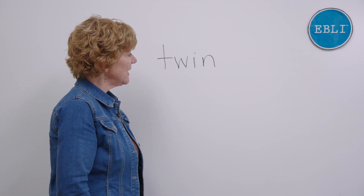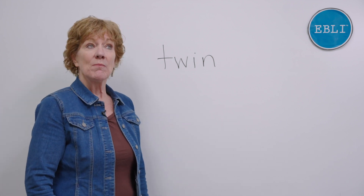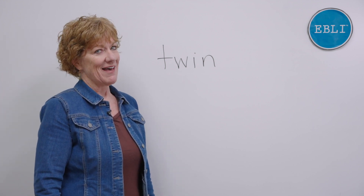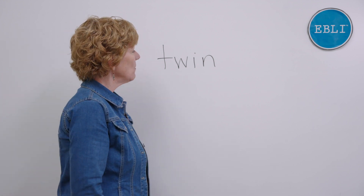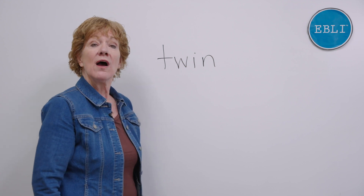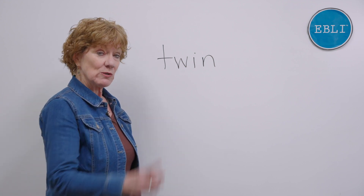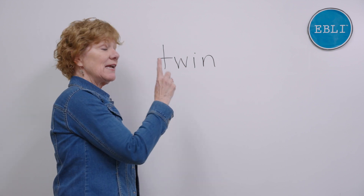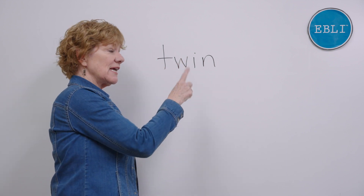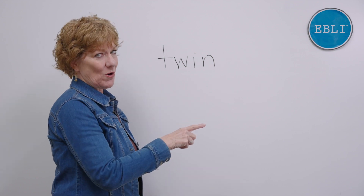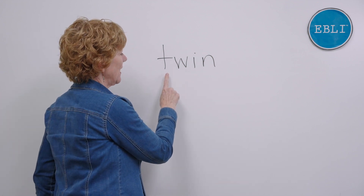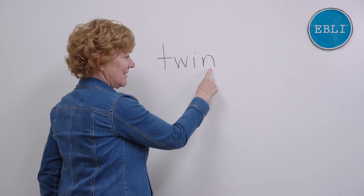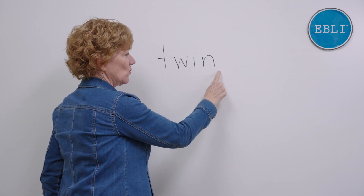So what we're going to be doing here is pulling sounds out of words, moving some sounds around, and learning pig Latin in this video. I've got a word on the board. When my finger touches the board, I want you to say each sound — say, stop, say, stop — and then the whole word. So let me hear those sounds. T, W, I, N — our word is twin.